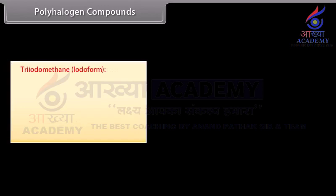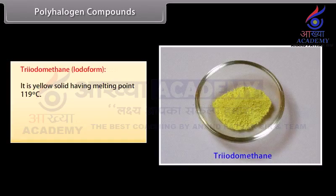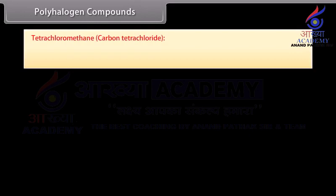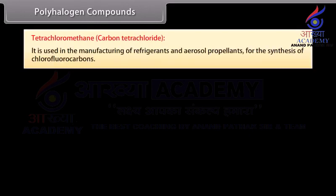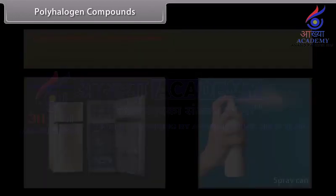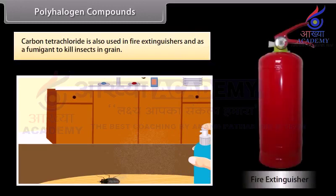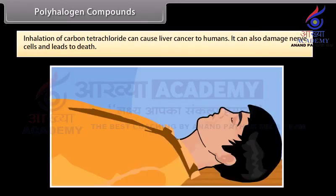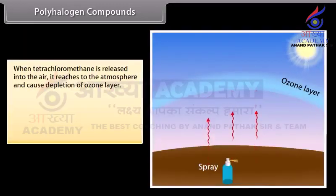Triiodomethane — iodoform: it is a yellow solid having a melting point of 119 degrees Celsius. It is used as an antiseptic because it liberates iodine, but due to its unpleasant smell it has been replaced by other medicines. Tetrachloromethane — carbon tetrachloride: it is used in the manufacturing of refrigerants and aerosol propellants for the synthesis of chlorofluorocarbons. Carbon tetrachloride is also used in fire extinguishers and as a fumigant to kill insects in grain. Inhalation of carbon tetrachloride can cause liver cancer in humans, and it can also damage nerve cells and lead to death. When tetrachloromethane is released into the air, it reaches the atmosphere and causes depletion of the ozone layer.